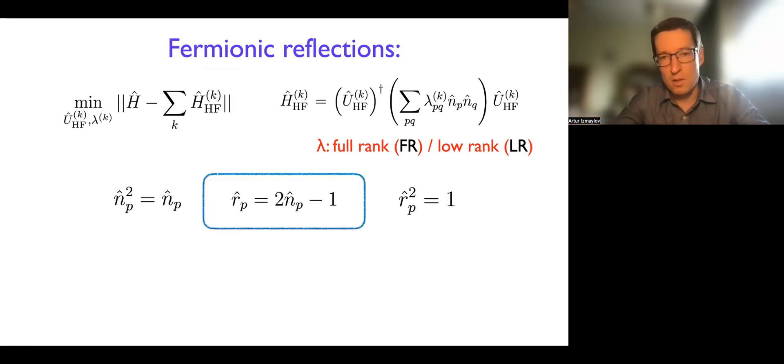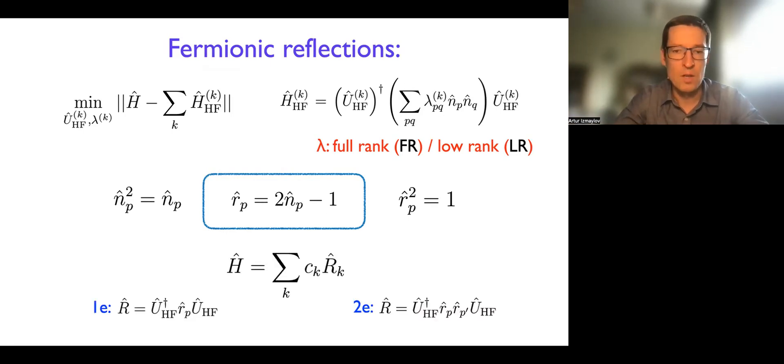And then in order to move things to unitaries, it's actually quite simple because our occupation numbers are really projectors. And to turn projectors to reflections, which are Hermitian unitaries, all you need is just to multiply by two and subtract one, right? So then you get the reflection out of the projector. And then for the two electron Hamiltonians, you have two possible reflections. It's either rotation of the one electron reflection, which is the single occupation number operator, or you can do unitary rotations of the products of two reflections, right? So that's the two electron reflections.